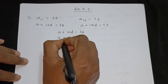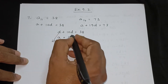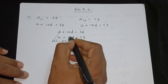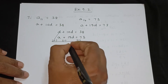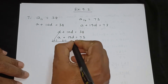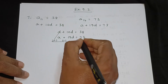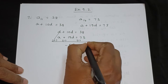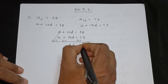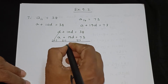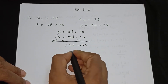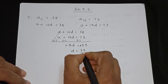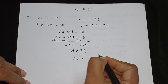Subtracting the first equation from the second: 15d minus 10d gives 5d, and 73 minus 38 gives 35. So 5d is equal to 35, therefore d is equal to 35 divided by 5, which gives d is equal to 7.